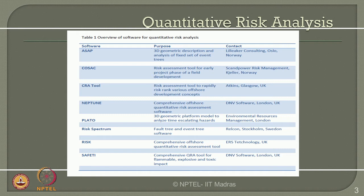COSAC is a risk assessment tool for early project phase of field development, developed by Kegler, Norway, which is a Scan Power risk management software. CRA tool developed by Atkins Glasgow in UK is used for risk assessment to rapidly risk rank various offshore development concepts. Neptune and Plateau are used for comprehensive offshore QRA and 3D geometric platform modeling respectively. Neptune is developed by DNV software in UK, whereas Plateau is developed by ERM in London. Risk Spectrum is focused on fault tree and event tree analysis software, developed by RELCON in Sweden.